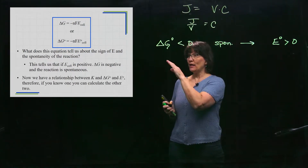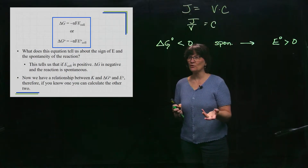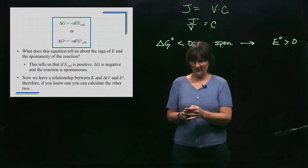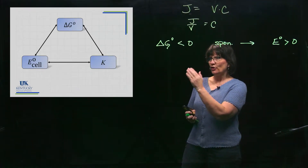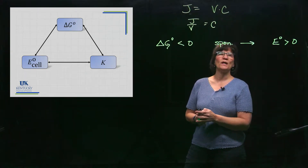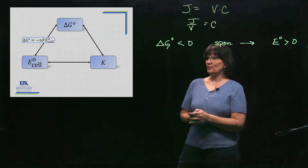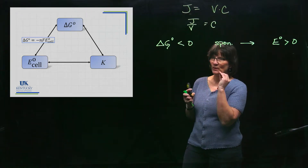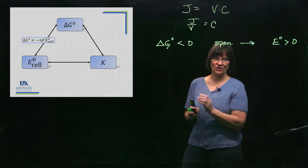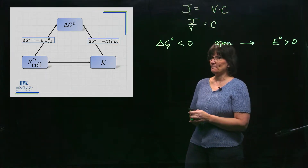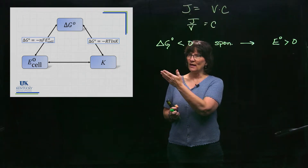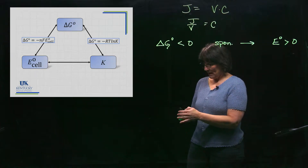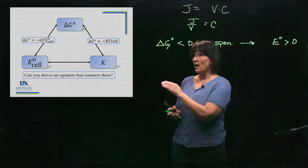In a previous chapter on thermochemistry, we learned the relationship between K and standard ΔG°. Now we have the ability to go between all three variables. We just learned the left side of this triangle — the relationship between Gibbs free energy and cell potential: ΔG° = −nFE°. The relationship between K and ΔG° must use standard ΔG°, so we are working entirely in the standard state world.